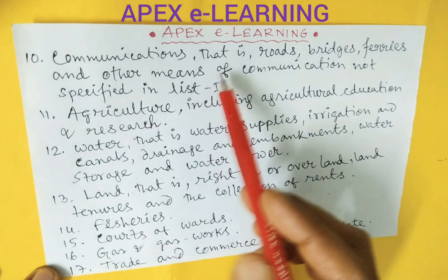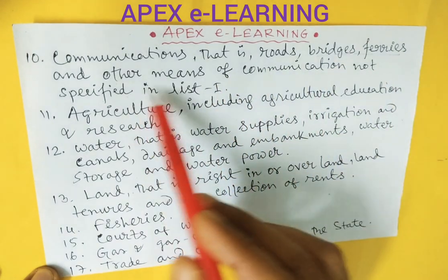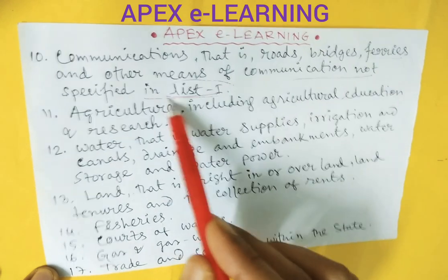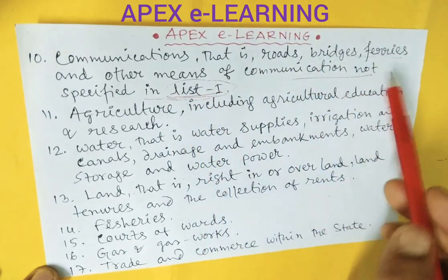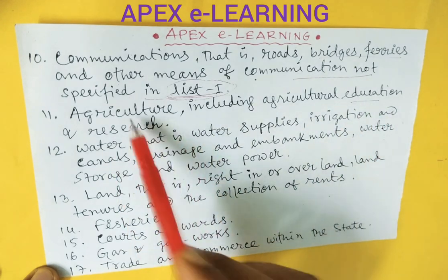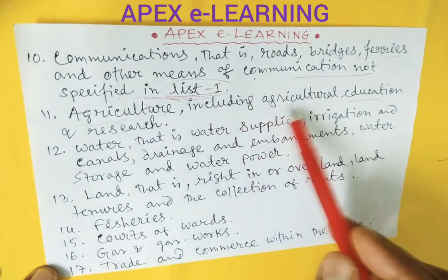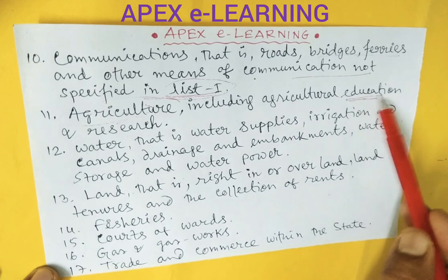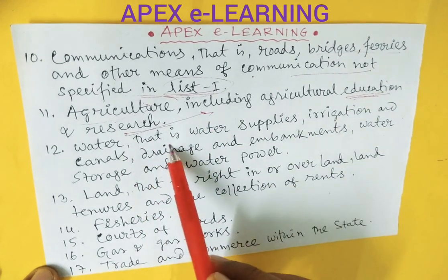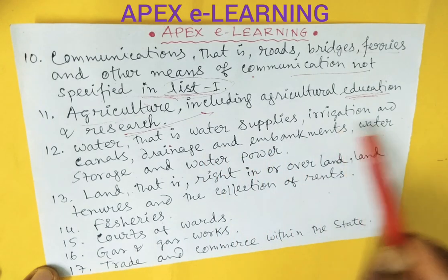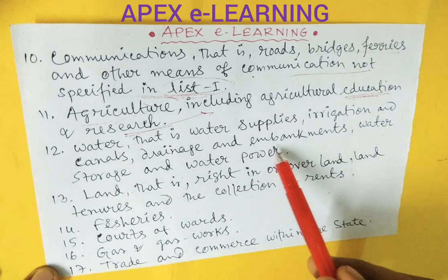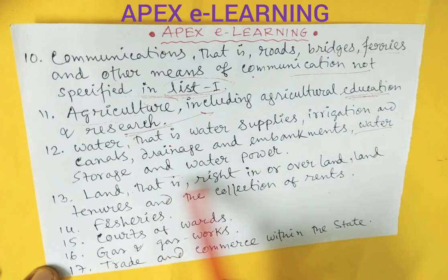Communication — that is, roads, bridges, ferries, and other means of communication not specified in list one or the union list. Agriculture, including agricultural education and research. Water — that is, water supplies, irrigation, canals, drainage, embankments, water storage, and water power.